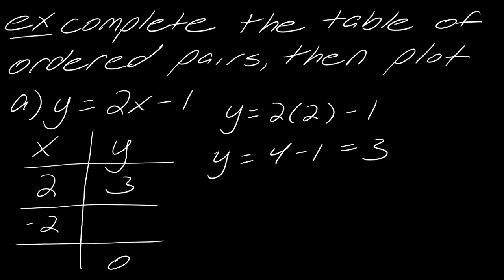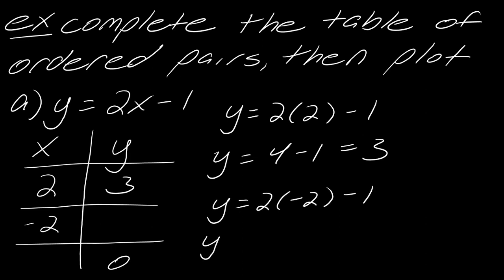Now let's do this again for x = −2. I'm going to replace x with −2, and then see what happens. So this becomes −4 − 1, which equals −5. I can plug −5 into the table.